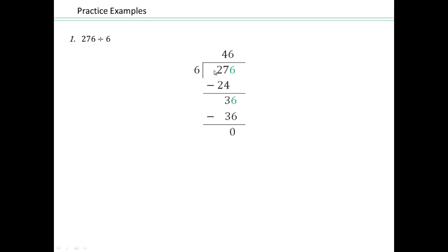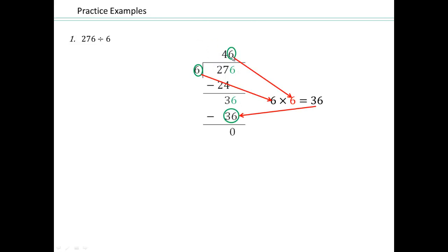So we have 6 times 4 is 24. Because 6 does not go into 2, we have to look at 27. So 6 times 4 is 24 — put the number 24 down here. Do the subtraction: 27 minus 24, which gives you 3. Then you bring this 6 down here, so now you have 36. 6 times 6 is 36, so that result goes down here. Do the subtraction, and that's your remainder.